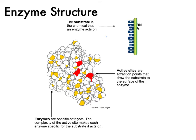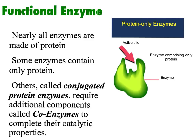Here we're looking at a three-dimensional enzyme structure. The key vocabulary: the thing that we're going to break down is called the substrate. Our substrate here is a bit of RNA, and our enzyme is a protein — a polymer of amino acids. Somewhere on the enzyme we have one or more active sites, which are the holes the substrates fit into. That's how the enzyme catalyzes the chemical reaction.